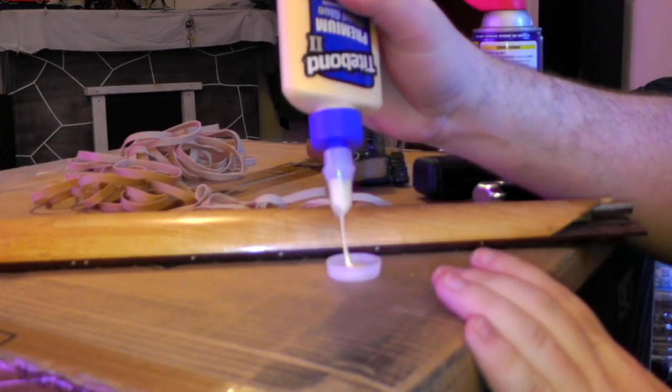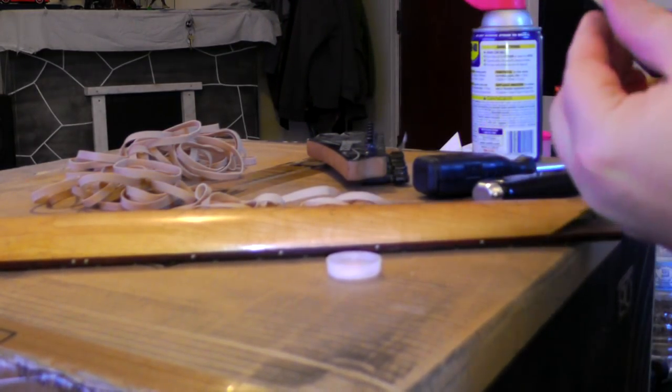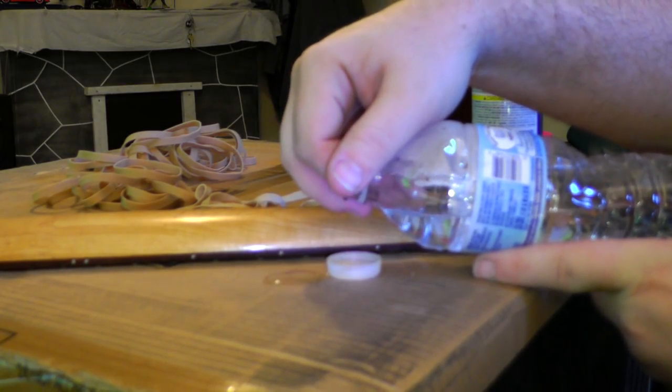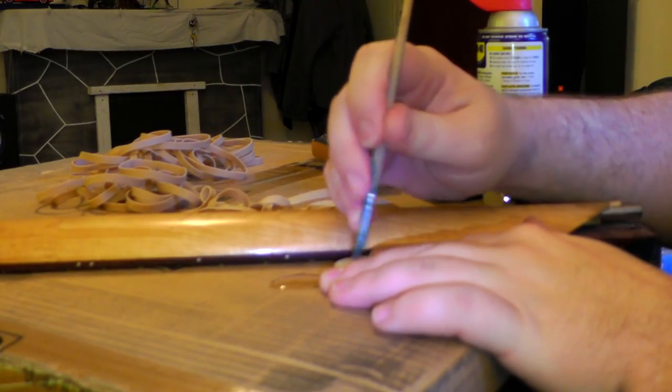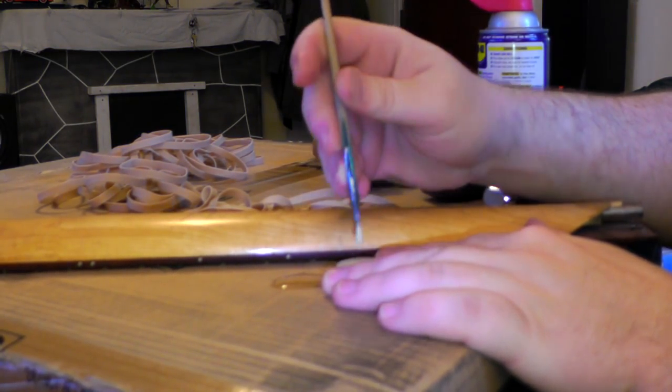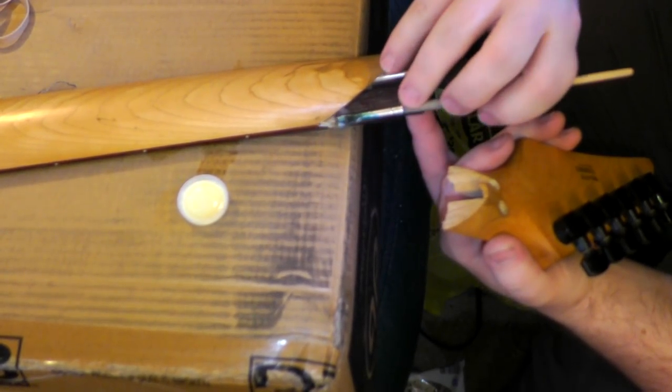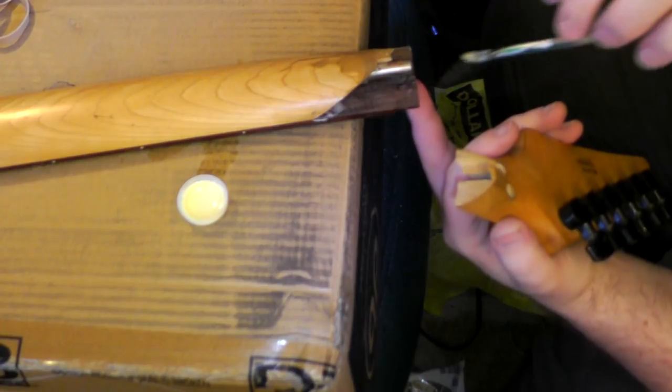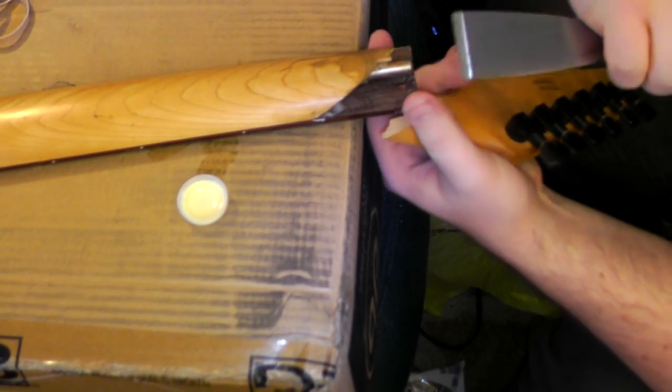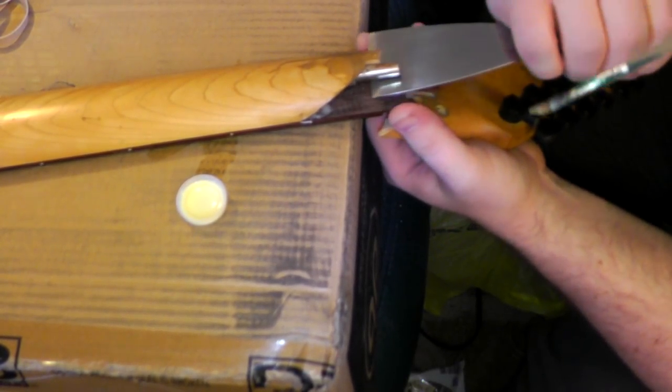I'm mixing a little bit of water with some Titebond and getting it all over my workspace. But that is just so that the capillary action of the wood will help pull it deep down under the fretboard. You have to make sure you get in those areas really, really well. So I'm using the putty knife to spread the board just a little bit so I can get some of this wetter glue down in there.